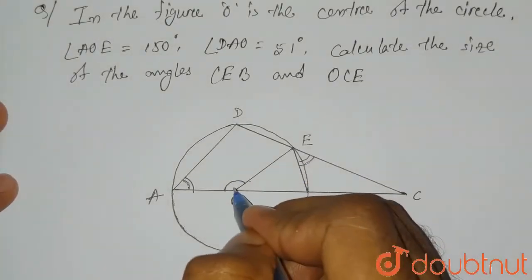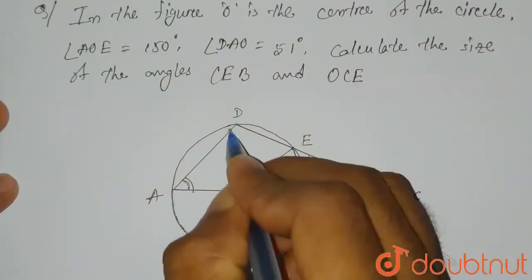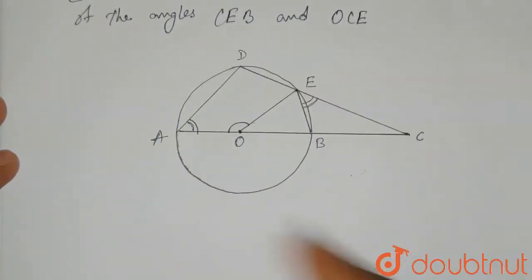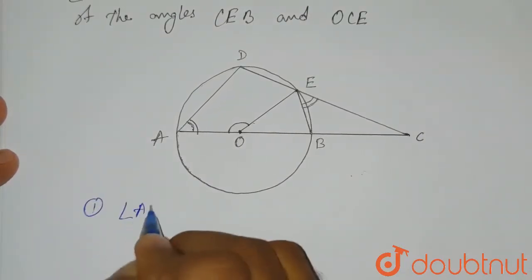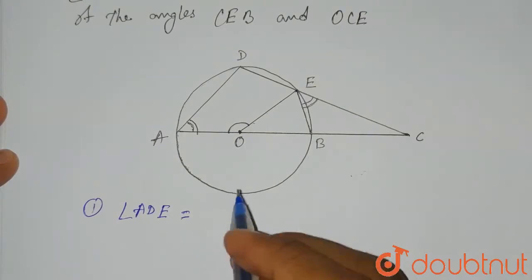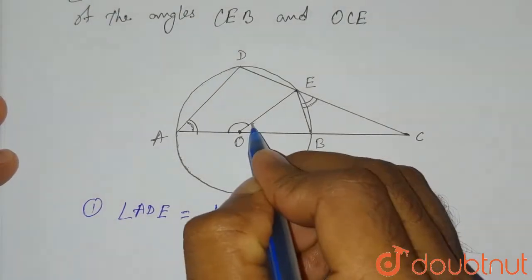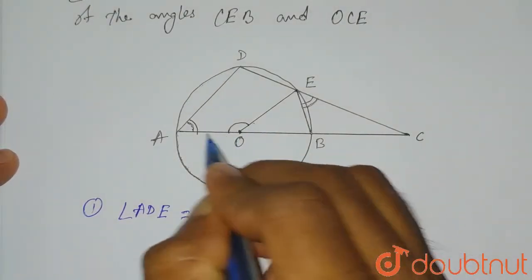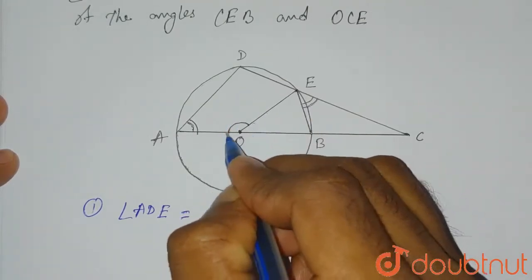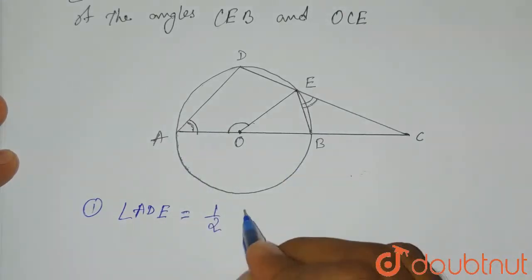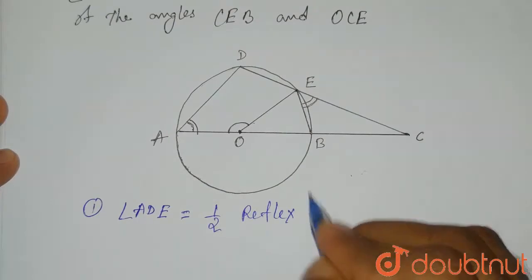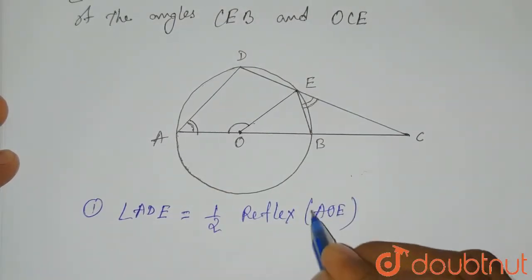It is given that angle AOE is 150 degrees. Angle ADE will be equal to half of the reflex of angle AOE. We calculate the reflex angle because the chord and the angle are both on the same side of the center, so we take the angle on the opposite side.